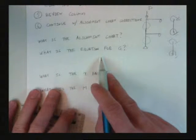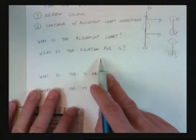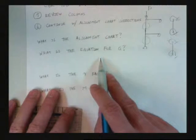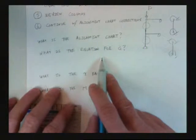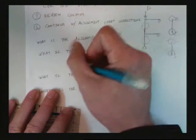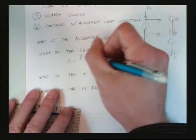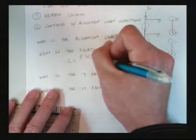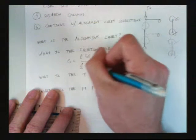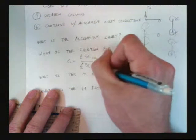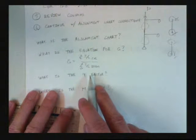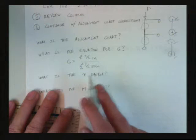So what's the equation for g? Because we need a g top and a g bottom. We go on the alignment chart. We have to decide if it's sway or no sway. But then the g equation doesn't change whether it's sway or no sway. It's the same. What's the equation for g? Sum of i over l of the column. Sum of i over l of the beam. And that's right. Well, that's the first version of the equation. We're going to change this equation.